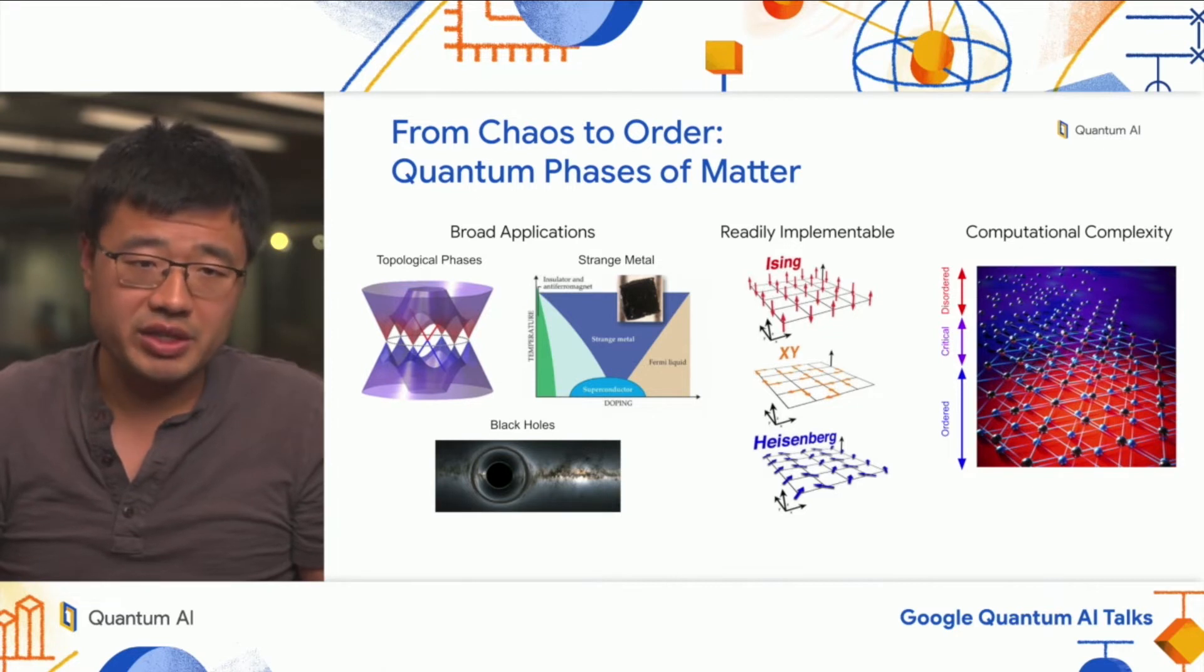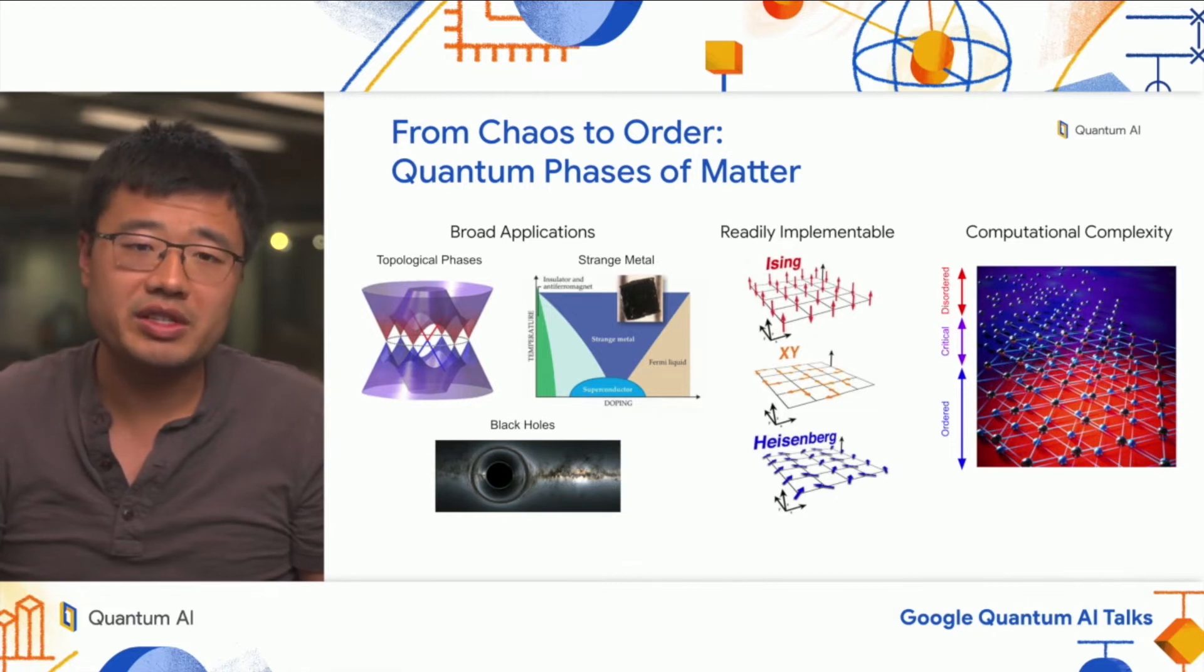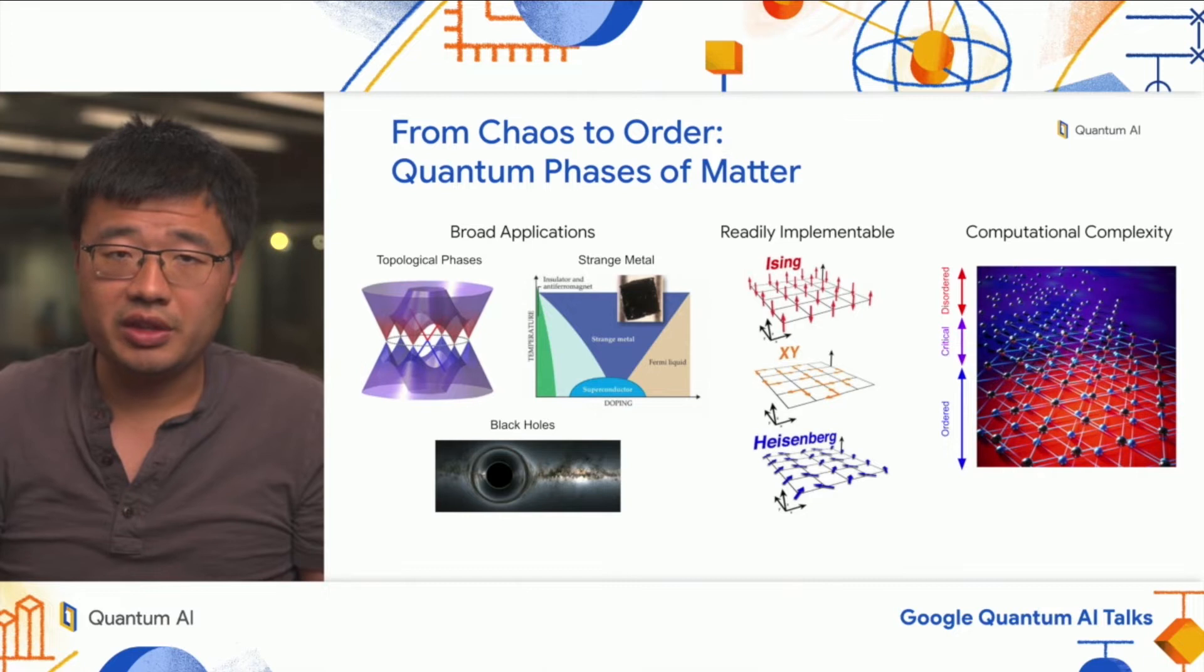They have a lot of applications. There are things like topological phases, which are relevant to what we're going to talk about today, and other things like non-Fermi liquid behavior or strange metals and black holes. The other reason is that to realize or simulate these phases of matter, all you need to do is take an Ising model or some sort of spin model and explore control parameters. These models are readily implementable on a quantum computer.